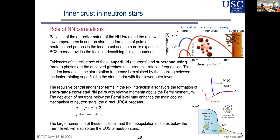We also have observational indications for superfluidity: glitches, where the rotation frequency of a pulsar occasionally increases. One interpretation is a coupling between the superfluid phase in the inner part — which has a smaller moment of inertia and rotates faster — and the crust. Angular momentum is transferred from the interior to the crust, accelerating it. If this interpretation is confirmed, glitches confirm the existence of a superfluid inside the star.